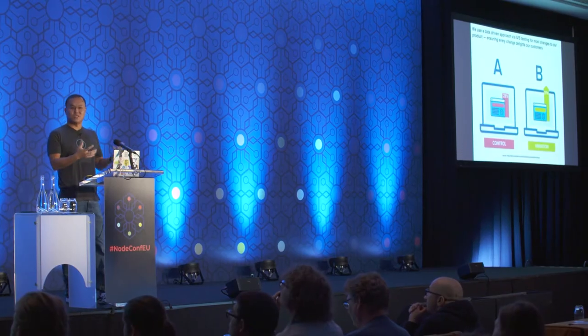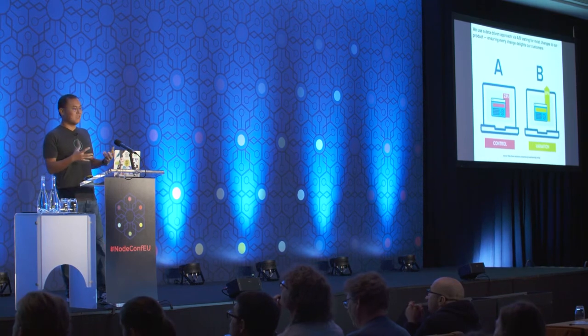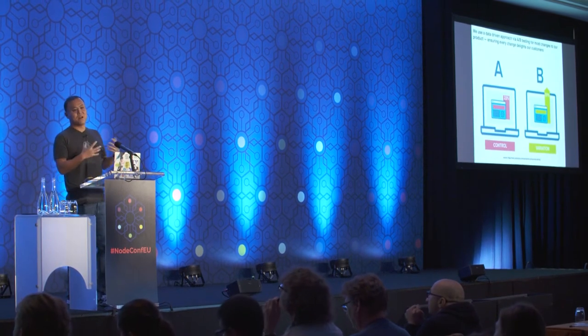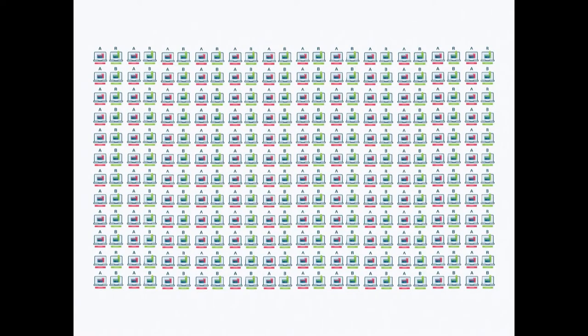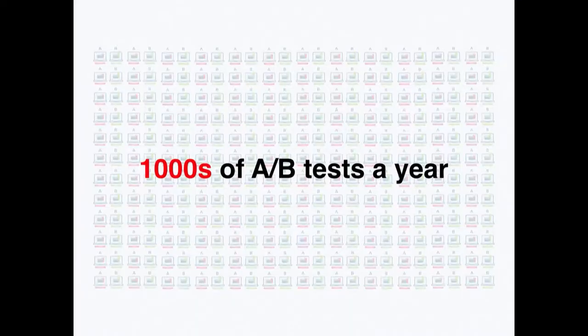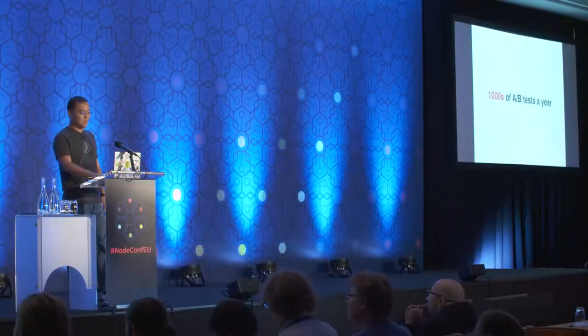We do a lot of A/B testing to get there. We don't make changes to the site randomly — we A/B test everything. Every little change, every product design improvement, every algorithm change is A/B tested. In fact, we run thousands of A/B tests a year, each with tens or twenty variations, so a lot of changes are happening to the service at one time.